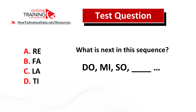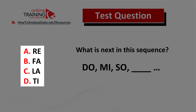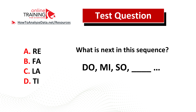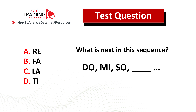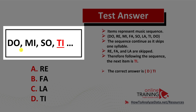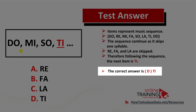Here is a tricky question from the real test. What comes next in this sequence? You have a sequence: Do, Mi, So, and then the missing item. You have four choices — A: RE, B: FA, C: LA, D: TI. The items represent a music sequence: DO, RE, MI, FA, SO, LA, TI, DO. Looking at the sequence, RE, FA, and LA are skipped, so the next item will be TI. The correct answer is choice D, TI. Hopefully you've nailed this question and now know how to answer these types of questions in the test.